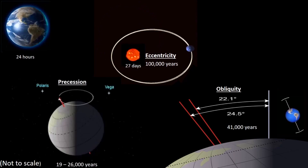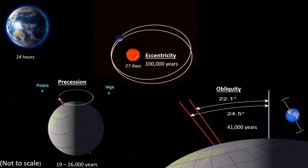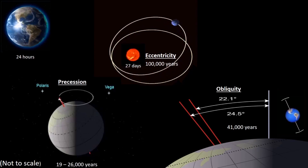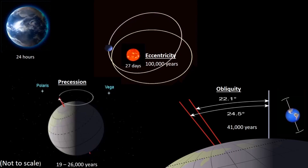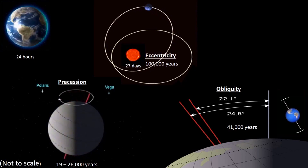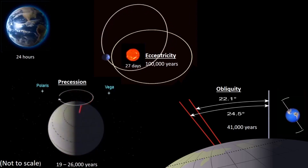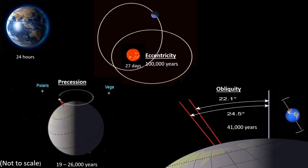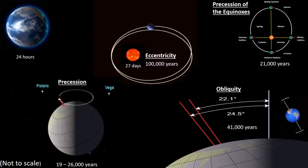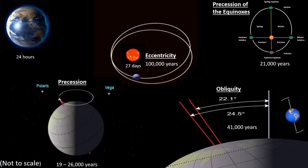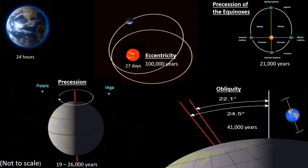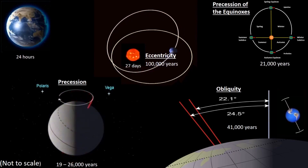The Earth also goes through a cyclic wobble. It moves from its current position, where the North Pole points to the star Polaris, to where the North points to the star Vega, and returns to pointing at Polaris. The full cycle takes place between 19,000 to 26,000 years. The combined effects cause the seasons to gradually cycle relative to the perihelion and aphelion, over a time span of about 21,000 years.